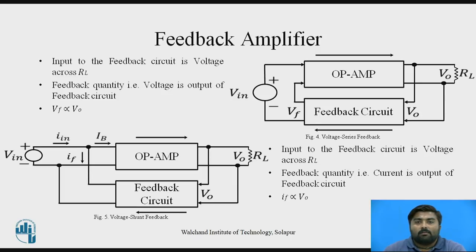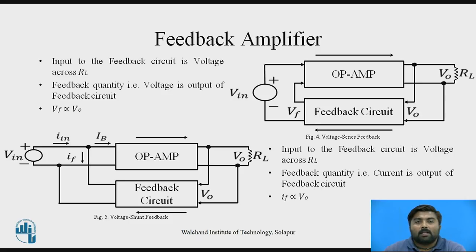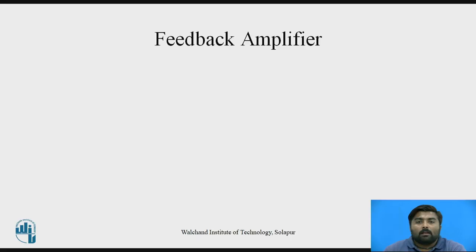Next is the voltage shunt feedback amplifier. Figure 5 shows the voltage shunt feedback amplifier. It is similar to the voltage series feedback amplifier; the only difference is that the output of the feedback circuit here is not a voltage but a current. The op-amp has two inputs: one is the V-in source connected to pin one, and the second is the current output from the feedback circuit. So the op-amp has two input currents: IB and IF. The feedback circuit input is still VO, the voltage across load resistor RL of the op-amp, so IF is directly proportional to VO.